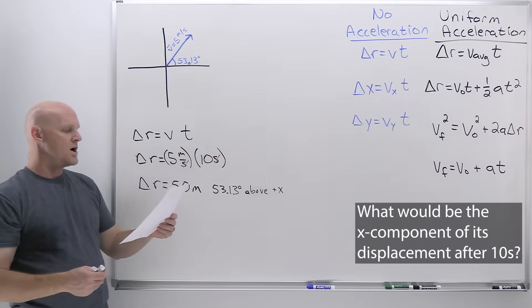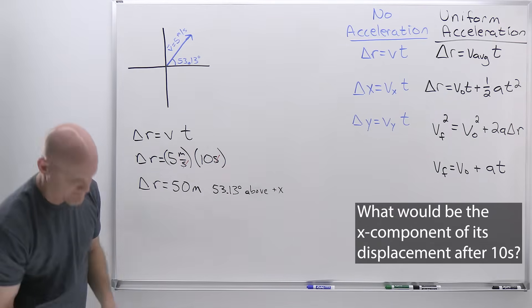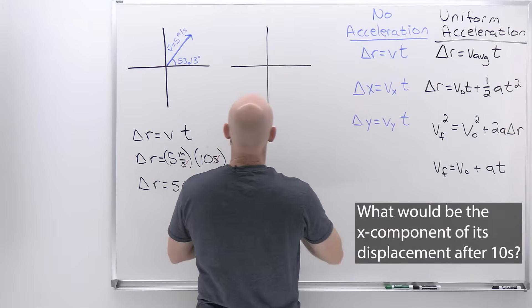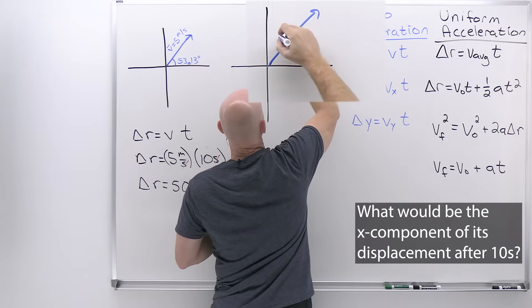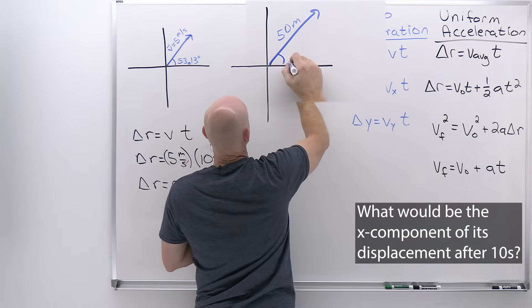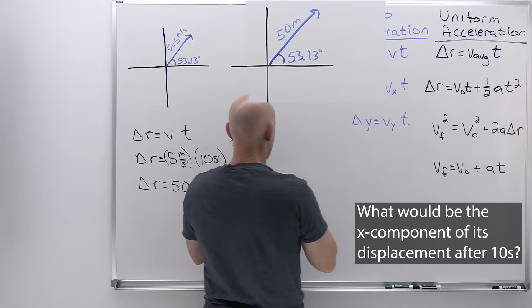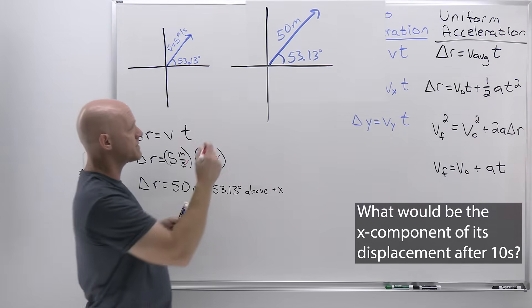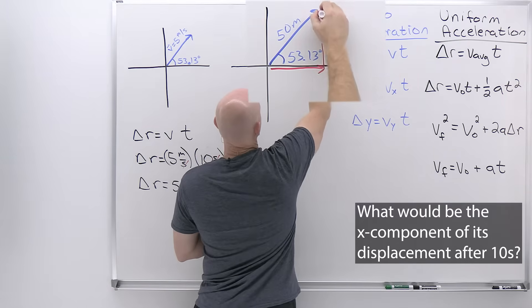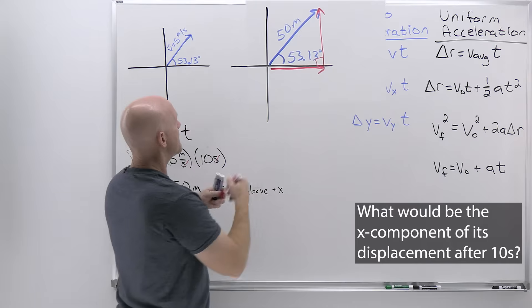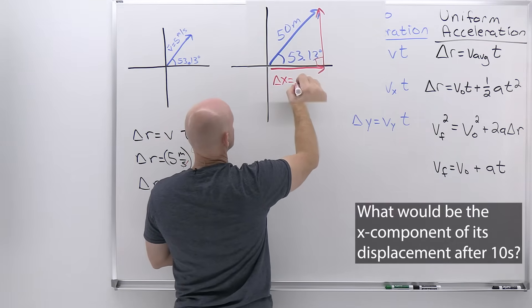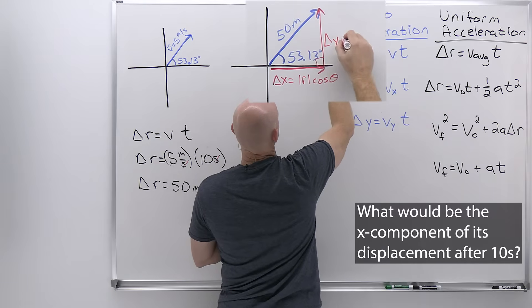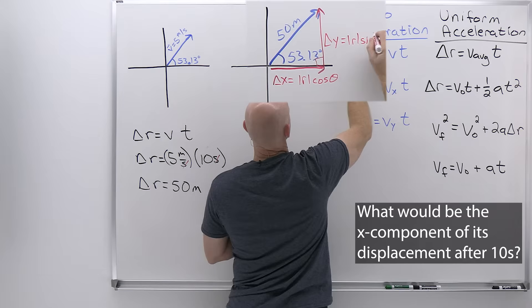The second question asks for the X component of the displacement after 10 seconds. We draw the displacement vector — magnitude 50 meters, 53.13 degrees above the horizontal — and break it into X and Y components, forming a right triangle. The X component, delta X, equals the magnitude of the vector times cosine theta. The Y component, delta Y, equals the magnitude of the vector times sine of the angle.